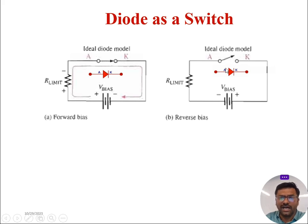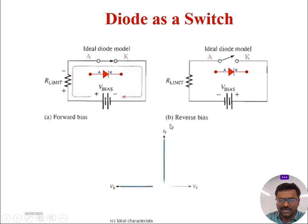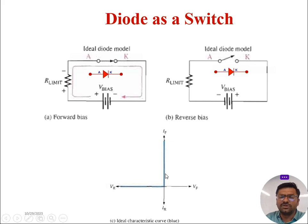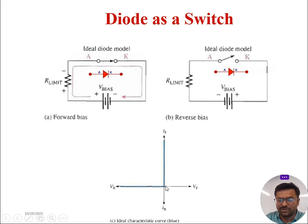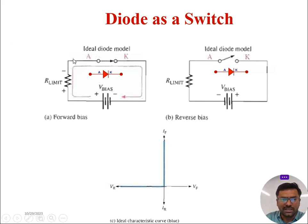So this is the operation for the ideal diode. You can observe the characteristics for the ideal diode look like this. If the input voltage is more than 0 volt, then the diode starts directly conducting. If the input voltage is less than 0 volt, then the diode goes in off state. This is the off state of the diode whenever the input voltage is less than 0, and this is the on state of the diode whenever the input voltage is more than 0. So this is the case for ideal diode.